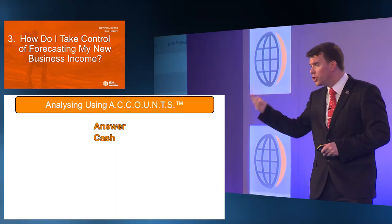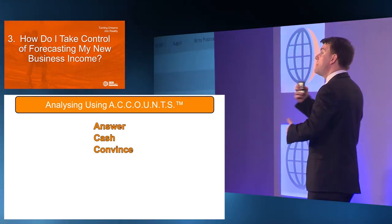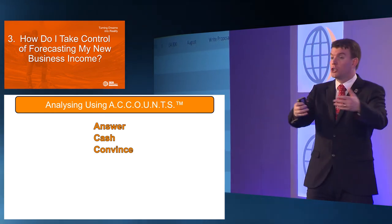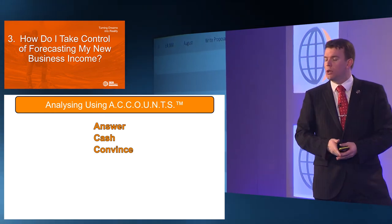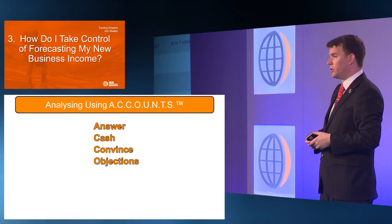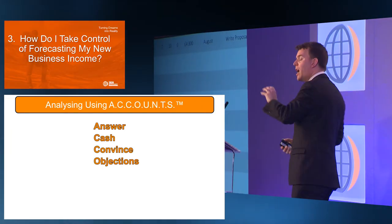Then ask yourself if they can afford you. The first C stands for cash — have you got any evidence to show that they can fund this? The second C is convince — is there anybody else we need to convince beyond who we've met with in order to reach a positive conclusion? The O is for objections — do we see any major objections getting in our way?